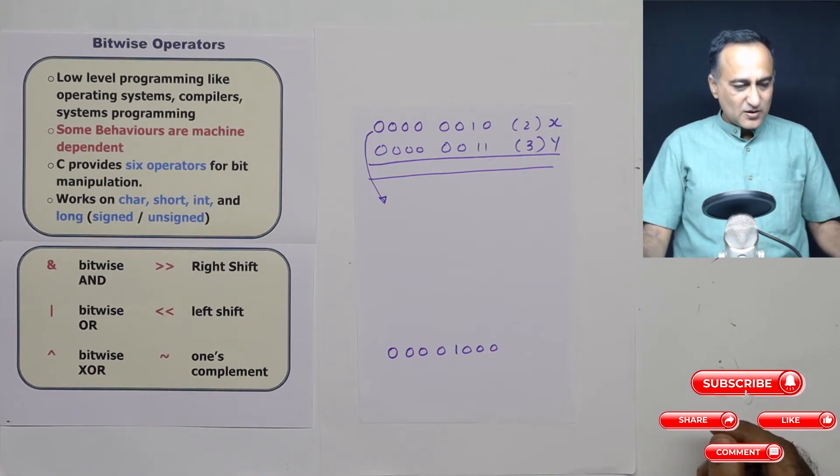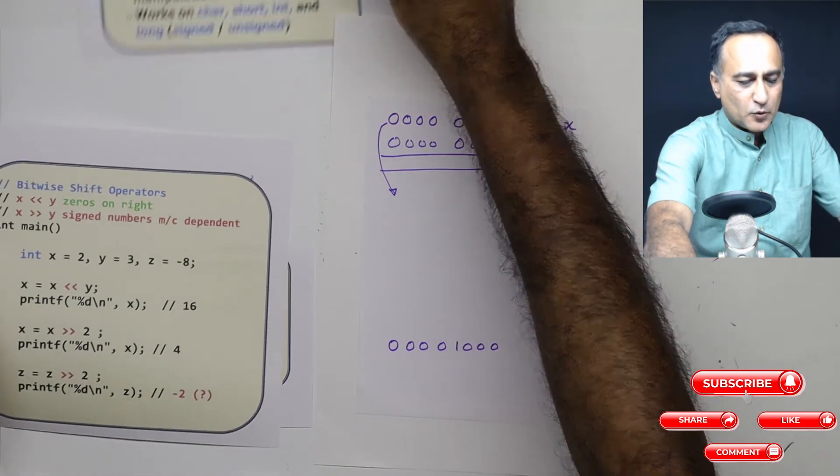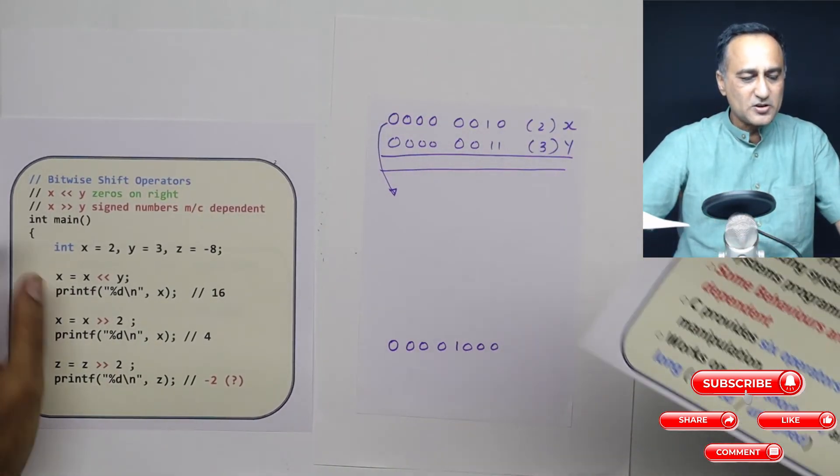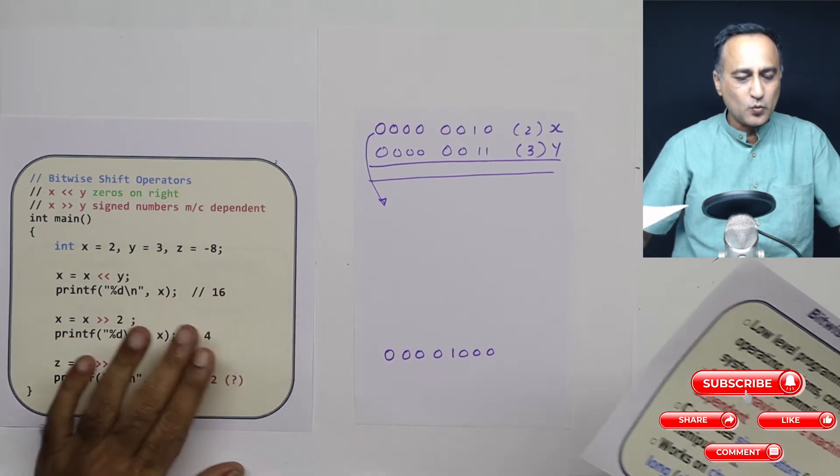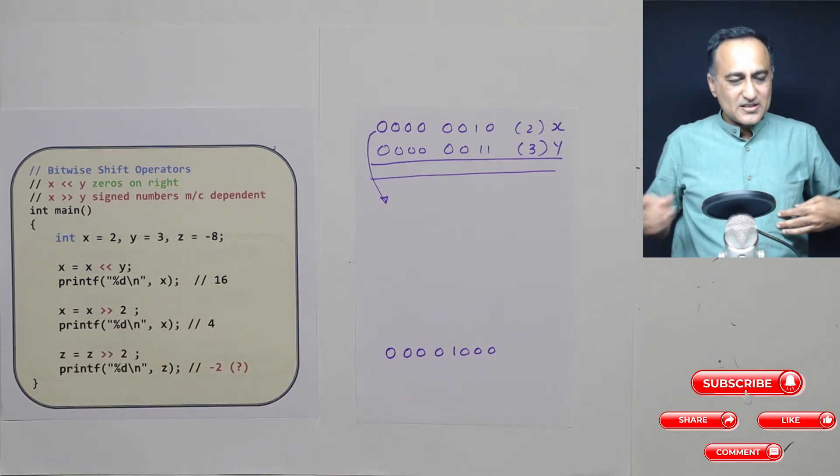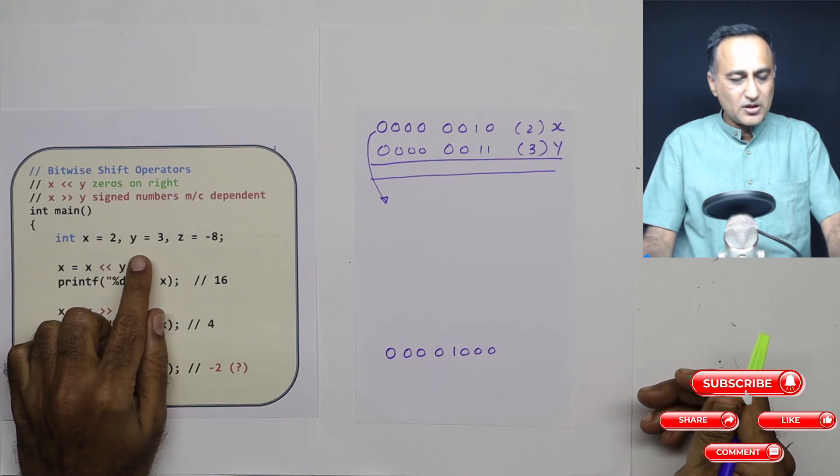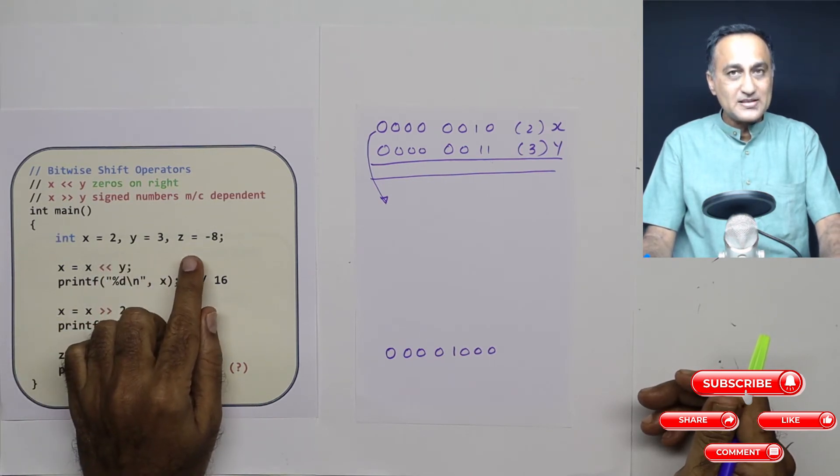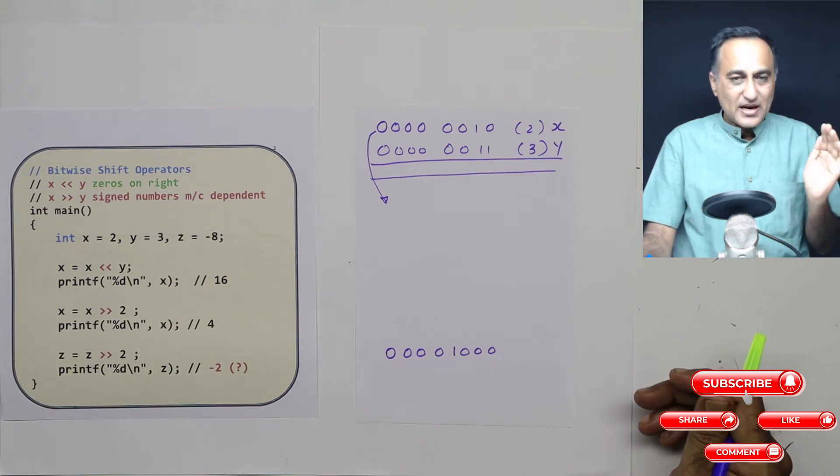In order to understand this, we'll take the assistance of a small program. Looking at this program should give you a fair idea of how the shift operator works in C. I have declared three variables: x equals two, y equals three, and z equals minus eight. Then I'm showing you left shift and right shift.